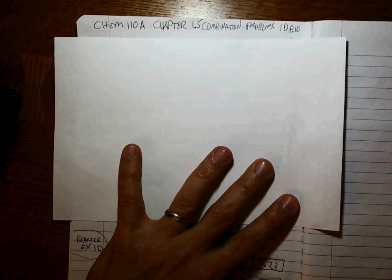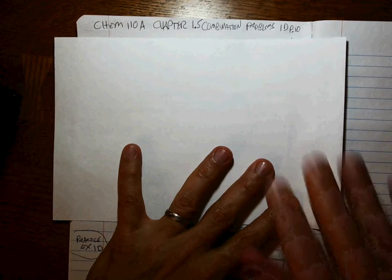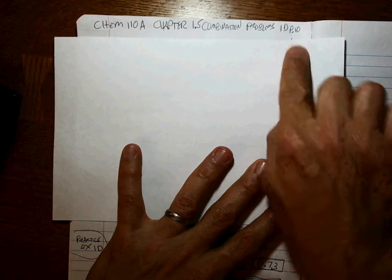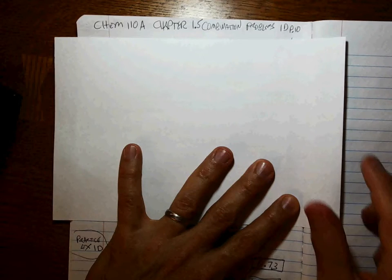Okay, continuing on with chapter 1, 1.5. These are combination problems, exercises 1D, page 10. Alright, so how do we deal with these?